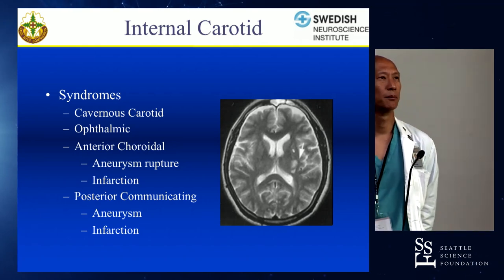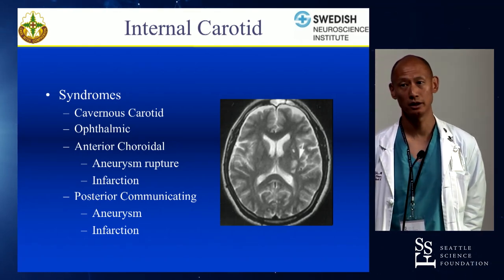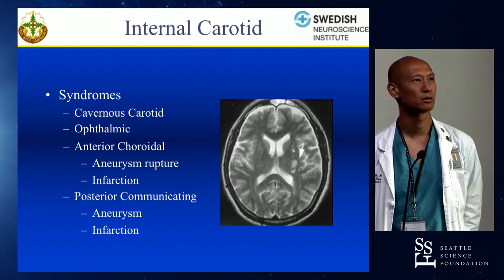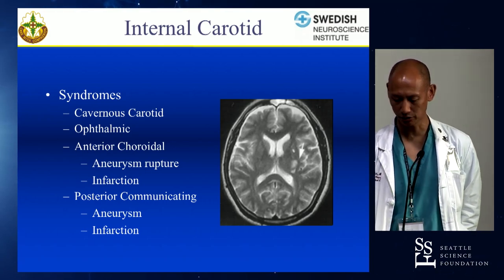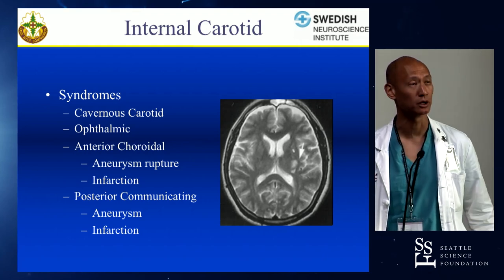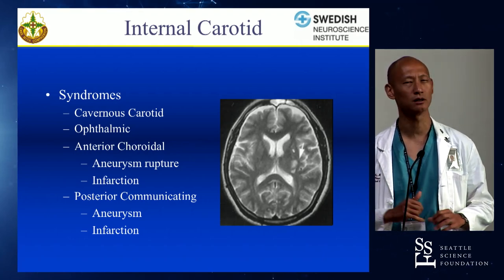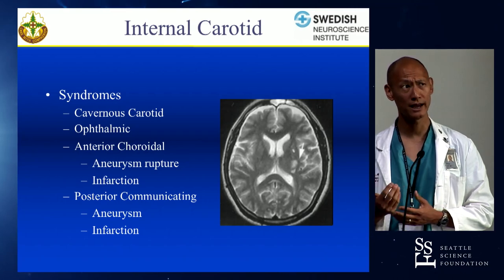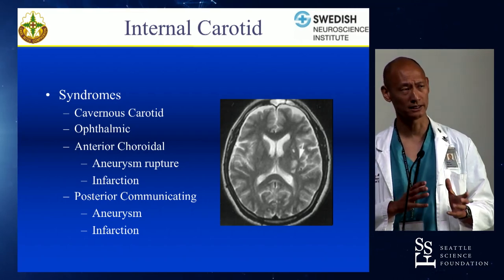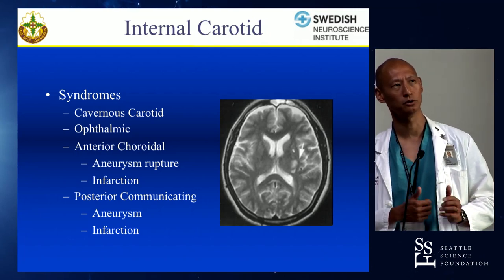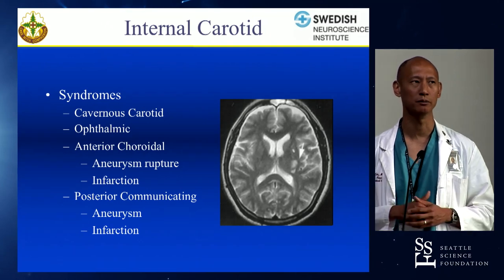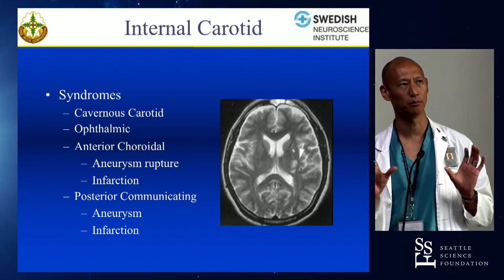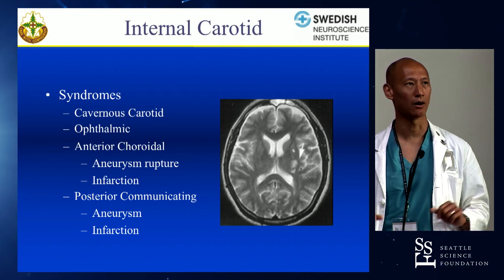Posterior communicating aneurysms: sometimes you can actually take the posterior communicating if it involves the aneurysm, as long as you can show that the P1 segment is sufficient to supply the cortex. If you're doing some sort of intervention on a posterior communicating aneurysm, remember that the posterior communicating — even though there is to-and-fro flow — gives rise to thalamic perforators. At the ICA terminus, many perforators arise posteriorly and run medially to supply the ventral medial thalamus. As they run more posteriorly along the P1 and P2, they can start supplying the posterior lateral thalamus.